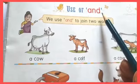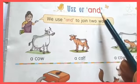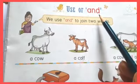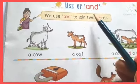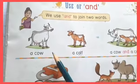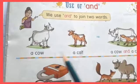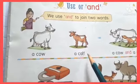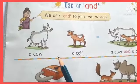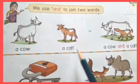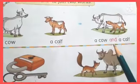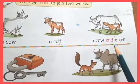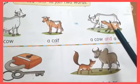And means 'or' in Urdu. We learnt that we use 'and' to join two words. As here: a cow and a calf. If we want to say both words together, then we have to use 'and'. A cow and a calf.